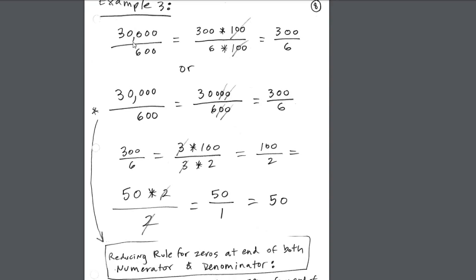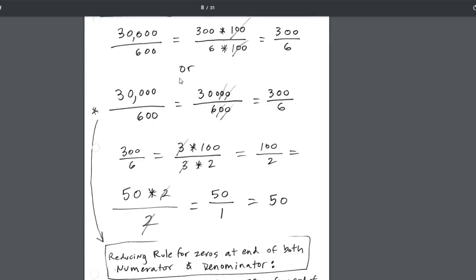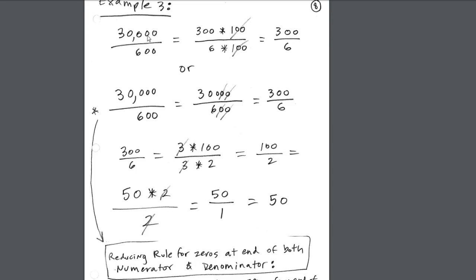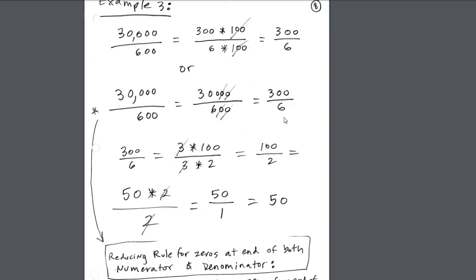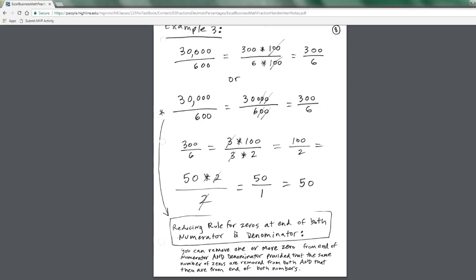On page 8, for 30,000 divided by 600, that's 300 times 100 and 6 times 100 — so we cancel the hundreds. The pattern is: if you have the same number of zeros at the end of both numerator and denominator, simply cancel them. We can skip straight to 300 divided by 6, and reduce further all the way to 50. Just cross out matching zeros at the end of both numerator and denominator to reduce more quickly.